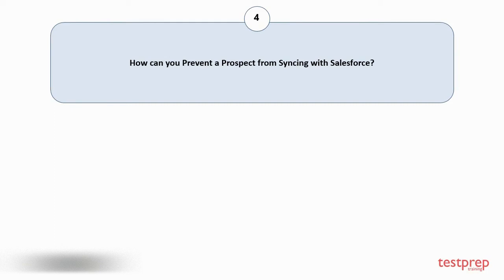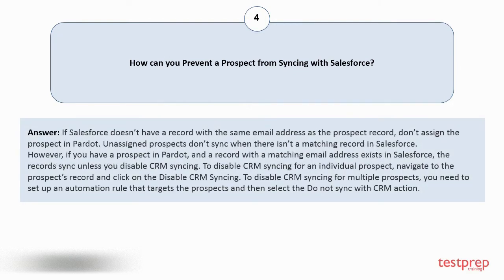Question number four: How can you prevent a prospect from syncing with Salesforce? If Salesforce doesn't have a record with the same email address as the prospect record, don't assign the prospect in Pardot — unassigned prospects don't sync when there isn't a matching record in Salesforce. However, if a prospect in Pardot has a matching email address in Salesforce, the records sync unless you disable CRM syncing. To disable CRM syncing for an individual prospect, navigate to the prospect's record and click on the disable CRM syncing option. To disable CRM syncing for multiple prospects, set up an automation rule that targets the prospects.